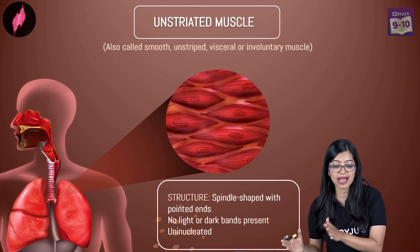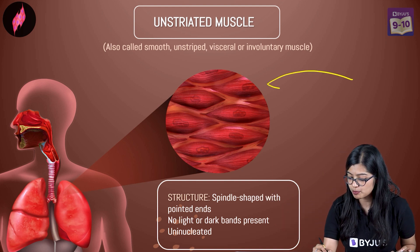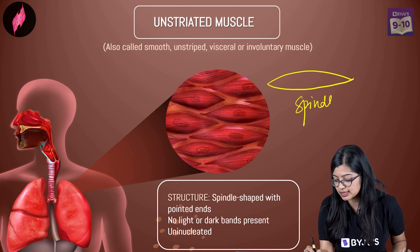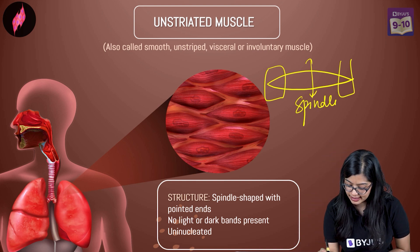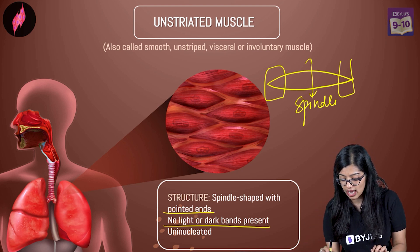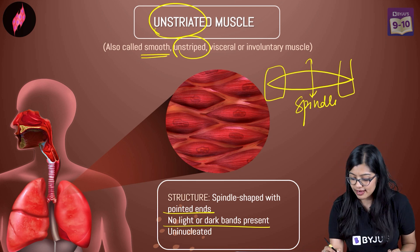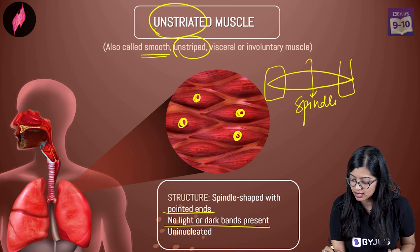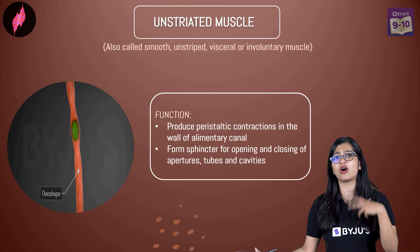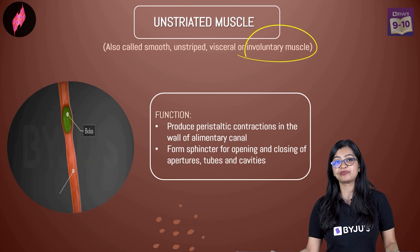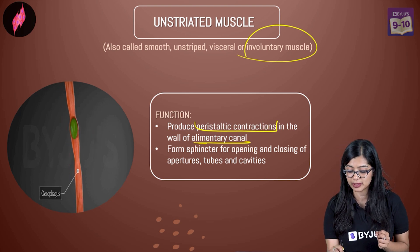Why do we call them smooth or unstriated muscles? It comes down to their structure. Unlike skeletal muscles which are cylindrical, these are made up of spindle-shaped cells — narrow at the ends and broad in the center — with pointed ends. There are no dark and light bands, no stripes present, which is why they are called unstriated or smooth muscles. They are uninucleate — meaning only a single nucleus per cell.